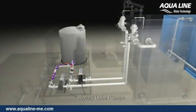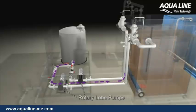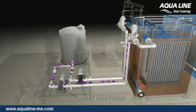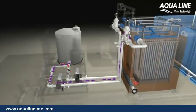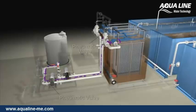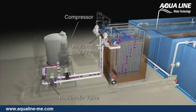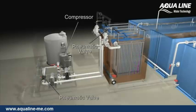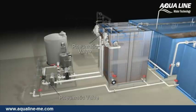The rotary lobe pumps periodically reverse the flow at predetermined frequencies and durations to back flush the membrane fibers. Pneumatic valves as well as pressure and flow measuring instruments provide continuous monitoring and control of system operation.